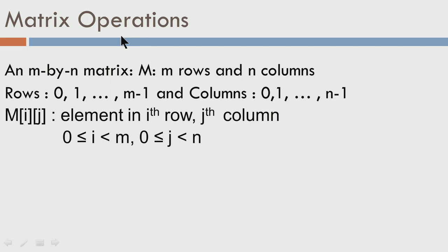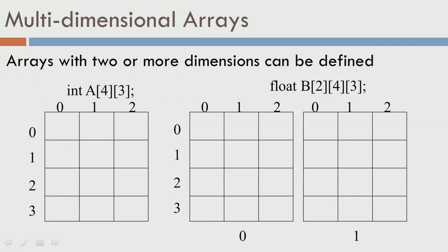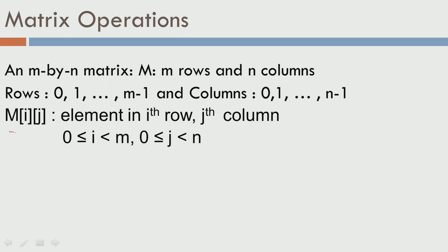Let us look at the most common use of 2D arrays — matrices. Let us look at a matrix called m with m rows and n columns. The rows are numbered from 0 to m minus 1 and columns from 0 to n minus 1. If you want to access the element in the ith row and jth column, you access it as m[i][j]. Here i should be less than m starting from 0, and j should be less than n starting from 0. This is just an extension of what you did for 1D arrays.